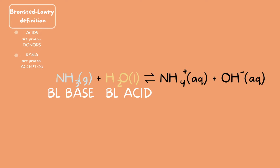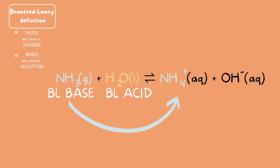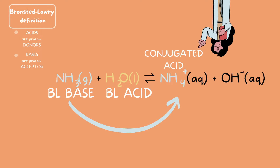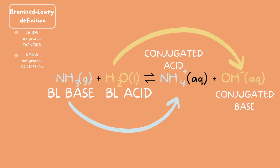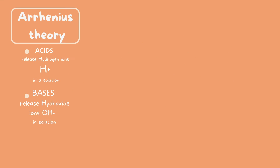This makes H2O the Bronsted-Lowry acid, because by definition acids are proton donors. There's one more step: Bronsted-Lowry bases will always create a conjugate acid. Here the conjugate acid is NH4+, and acids will always create a conjugate base — here the conjugate base is OH−. Let's go ahead and move on and look at an example of the Arrhenius theory.